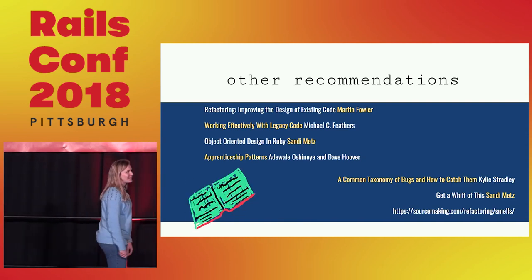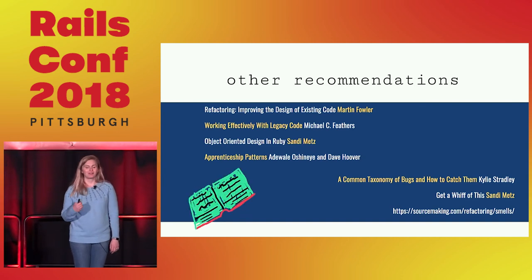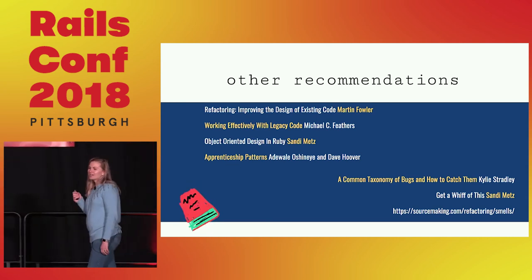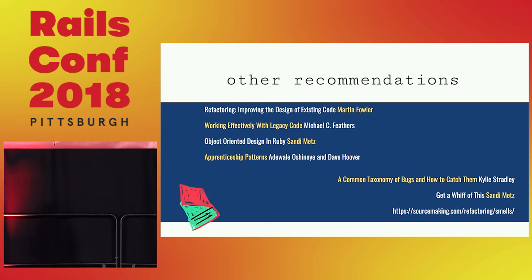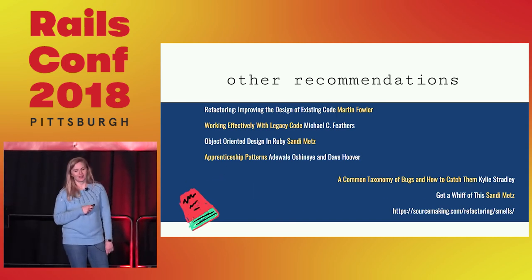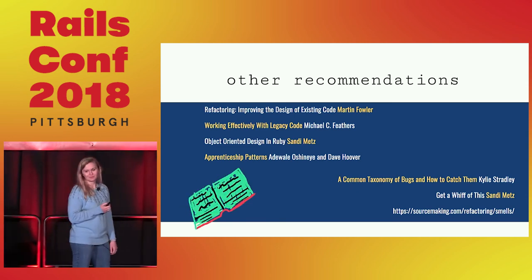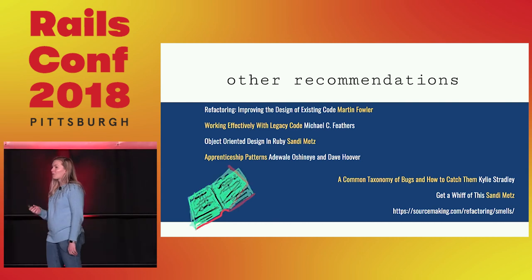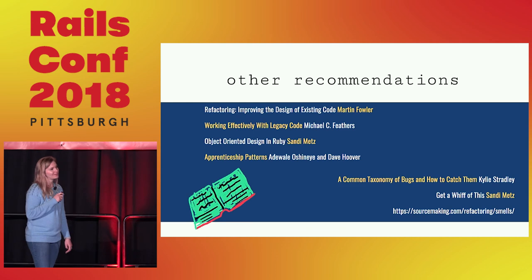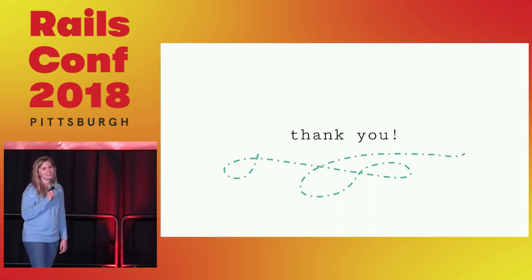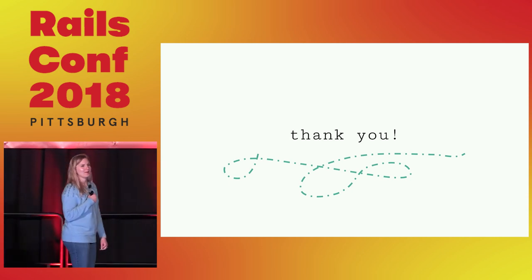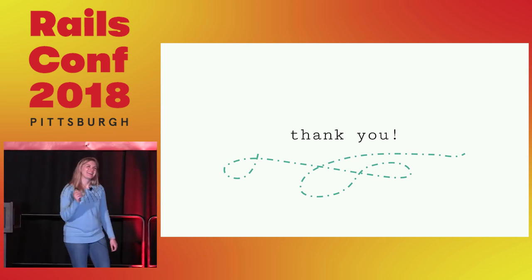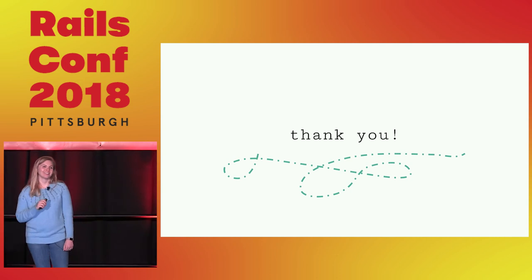Here are my recommendations. I talked a lot about Michael Feathers' 'Working Effectively with Legacy Code' and 'Refactoring' by Martin Fowler — both are great. I also recommend 'Object-Oriented Design in Ruby' and 'Apprenticeship Patterns.' For talks, I recommend 'A Common Taxonomy of Bugs and How to Catch Them' by Kylie Stradley, and 'Get a Whiff of This' by Sandy Metz, which heavily relies on the code smells described in the Refactoring book. Finally, for code smells right now, visit sourcemaking.com/refactoring/smells. Thank you very much to all the people who helped me be here today.